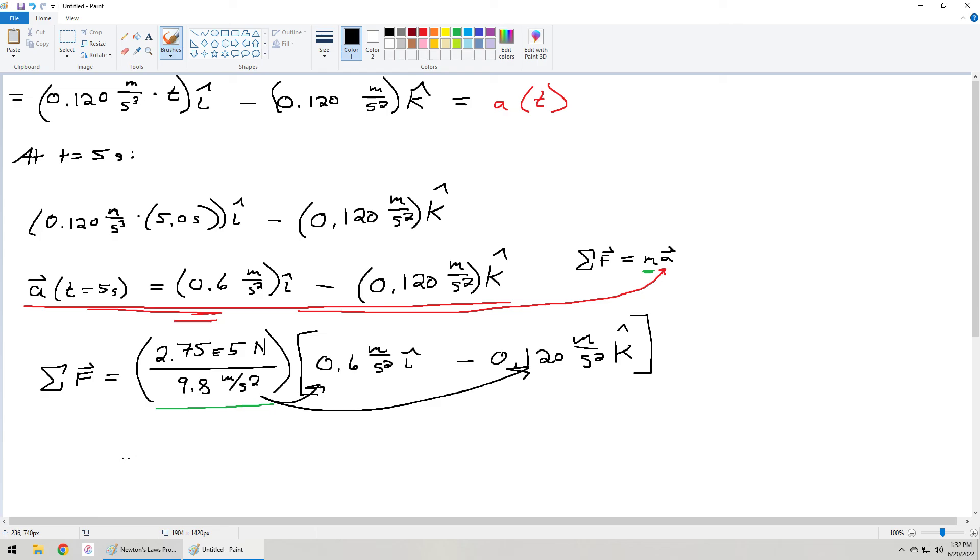So, when you multiply this scalar and distribute it to both components and truncate it to two significant figures, here is what you should be getting. I'm going to use approximately equal to. 1.7 e to the 4 newtons, located in the i-hat direction, and then minus 3.4 e to the 3 newtons in the k-hat direction. And this vector right here that I am boxing in purple, this is our final answer.